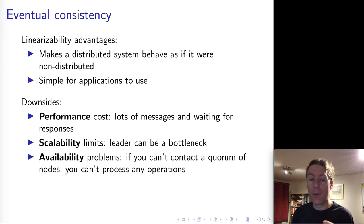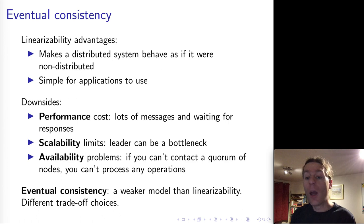Perhaps the deepest problem with linearizability is availability. Every operation needs to contact a quorum of nodes, and if you can't contact a quorum for whatever reason, maybe you're disconnected on the network, you can't process any operations. Neither reading nor writing is possible if you can't contact a quorum. That's why alternative consistency models have been developed with different trade-offs.